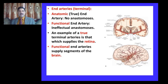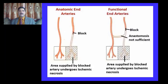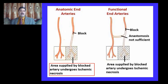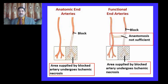An example of a true terminal artery is the artery that supplies the retina — the retina is an example of a terminal end artery. An example of a true functional end artery is the artery supplying segments of the brain. Coronaries are also an example of functional end arteries. In the first case, the area supplied by an end artery that is blocked undergoes ischemic necrosis, with no collateral circulation between the two adjacent areas. In the second case, anastomosis exists between the two vessels supplying adjacent tissue, but in case of blockade the area supplied by the blocked artery still undergoes ischemic necrosis despite anastomosis with its surrounding vessel.